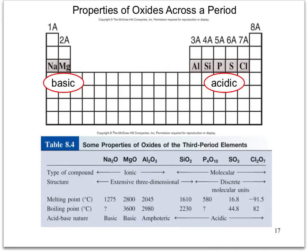Here we look at the oxide properties across a period. In period 3, sodium and magnesium form basic anhydrides, whereas aluminum, silicon, phosphorus, sulfur, and chlorine all form acidic anhydrides.